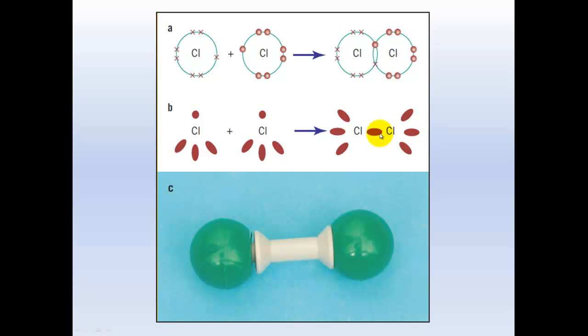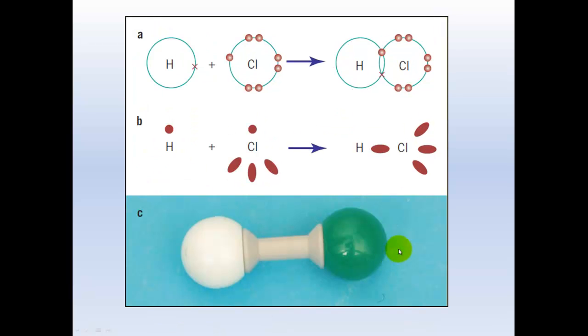We're only talking about the bonding pairs of electrons when it comes to describing the final shape. Hydrogen chloride is the same situation: hydrogen doesn't have any lone pairs, chlorine has three. These, however, are ignored when we discuss the shape of the molecule, and it looks like this, a linear shape.